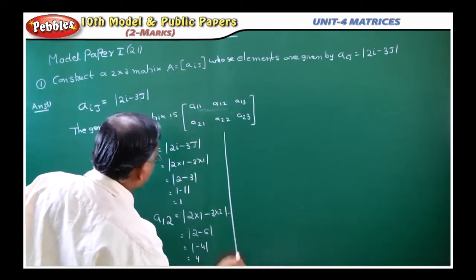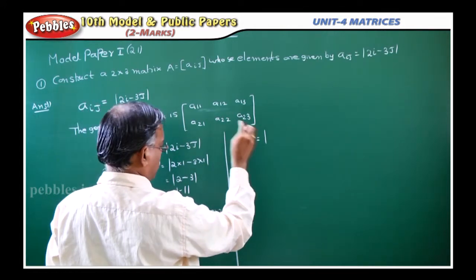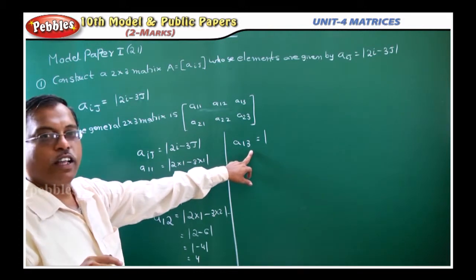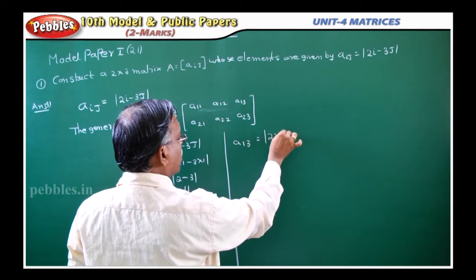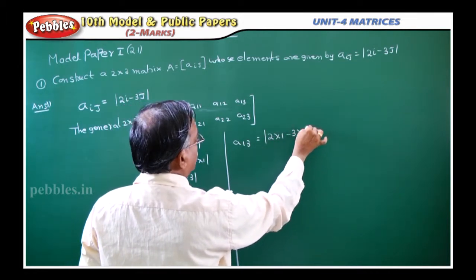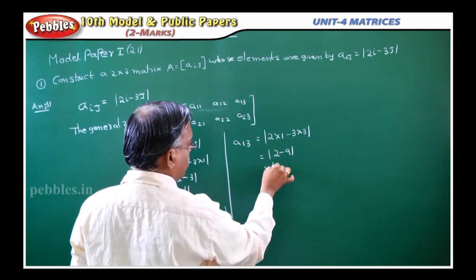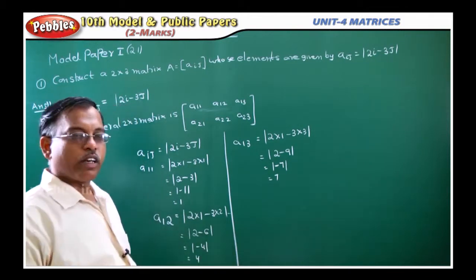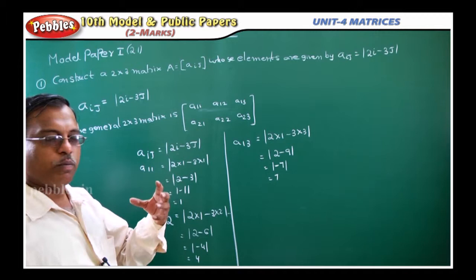Next, A₁₃. A₁₃ means i value is 1, j value is 3. Substituting: 2 into 1 minus 3 into 3, which is 2 minus 9, nothing but minus 7, and modulus of minus 7 is 7, because negative values inside modulus are considered as positive. So A₁₃ equals 7.